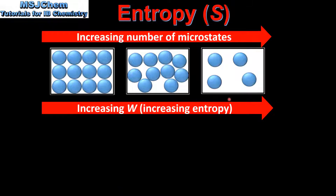Gases, with their random arrangement of particles, have the greatest number of microstates, and solids, with their fixed arrangements of particles, have the lowest number of microstates. In terms of the distribution of energy, in gases there are more ways that the energy can be distributed and in solids there are fewer ways. Therefore, gases have the greatest entropy, followed by liquids, and then solids have the lowest entropy.